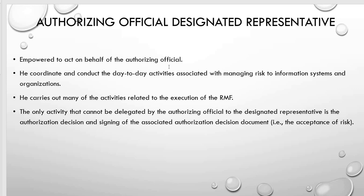Authorizing Official Designated Representative. This person is empowered to act on behalf of the authorizing official. He coordinates and conducts the day-to-day activities associated with managing risk to information systems and organizations. He carries out many of the activities related to the execution of the RMF. The only activity that cannot be delegated to the designated representative is the authorization decision and signing of the associated authorization decision document — that is, he cannot accept risk.